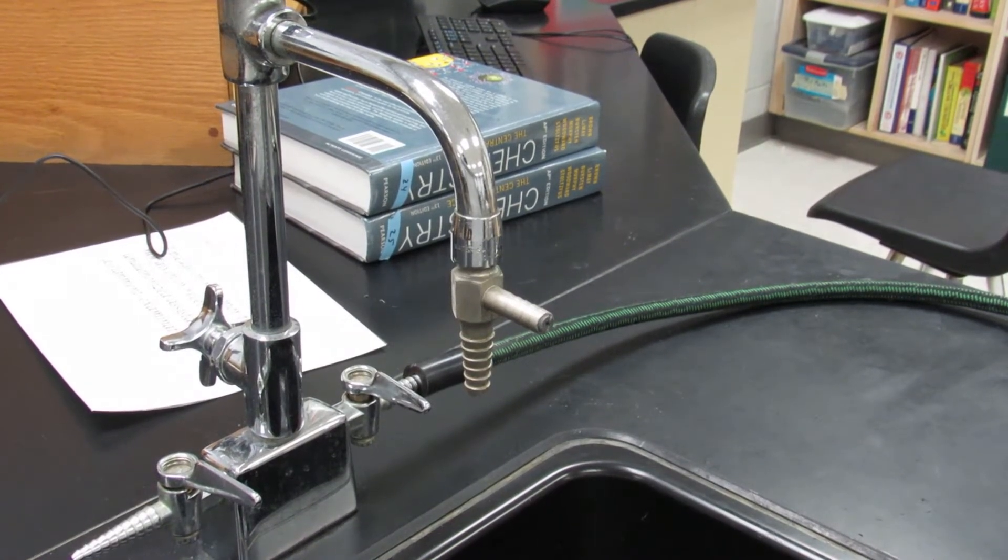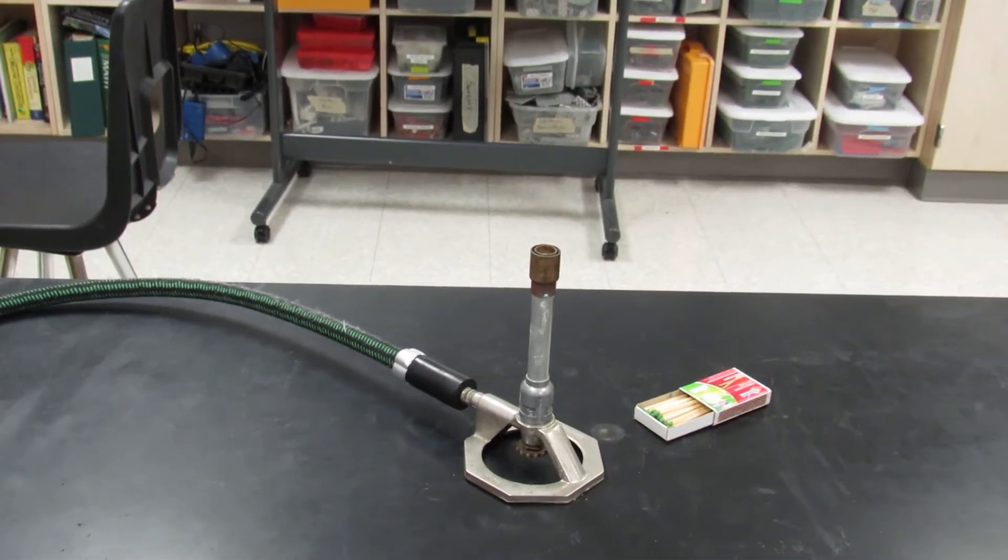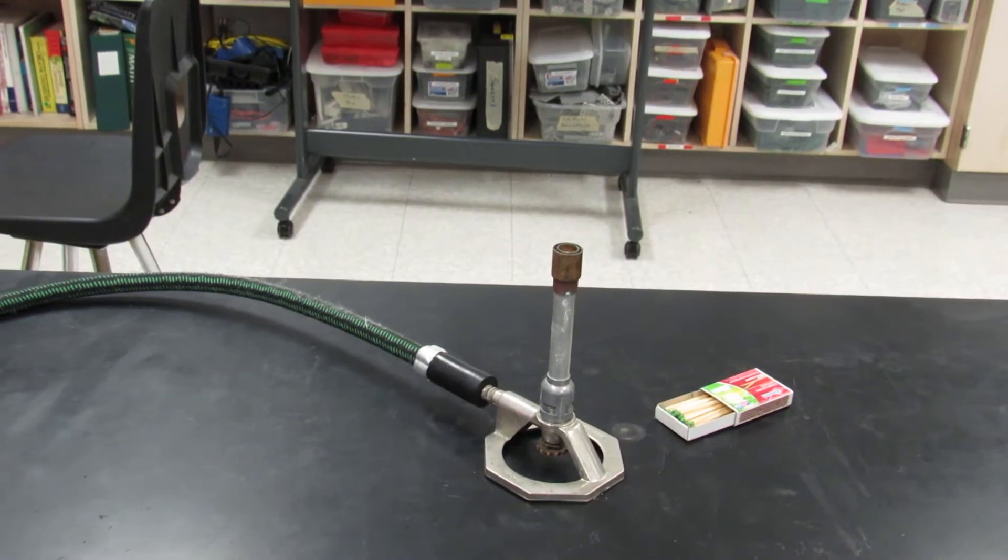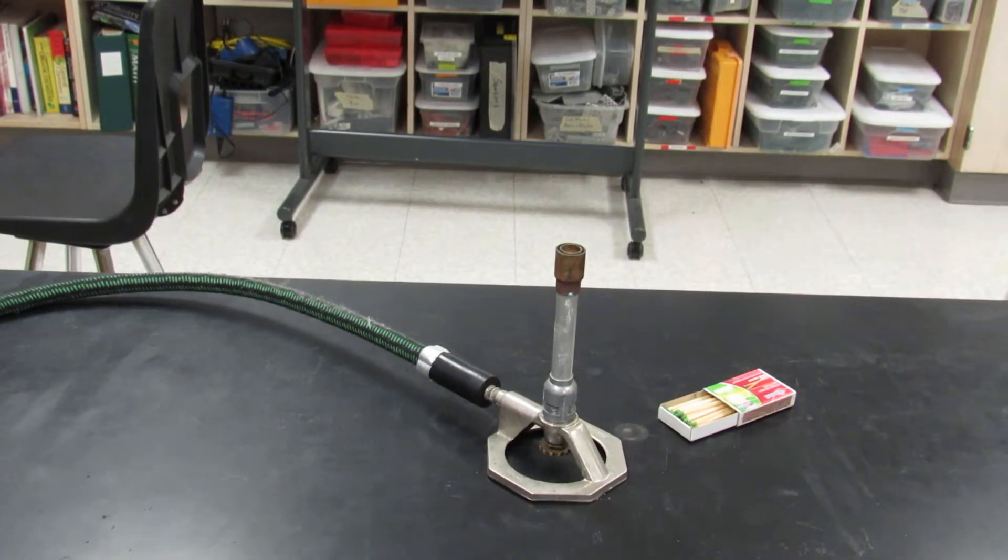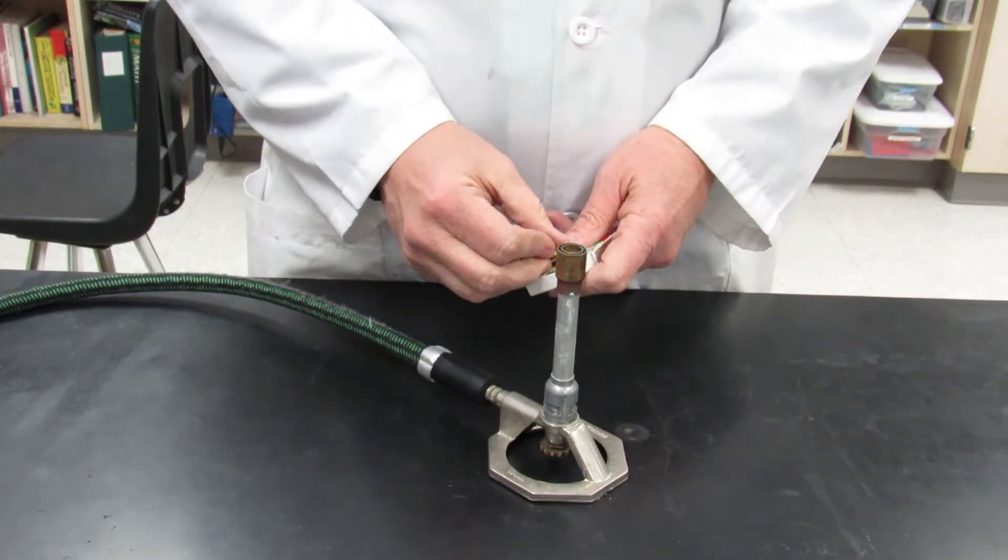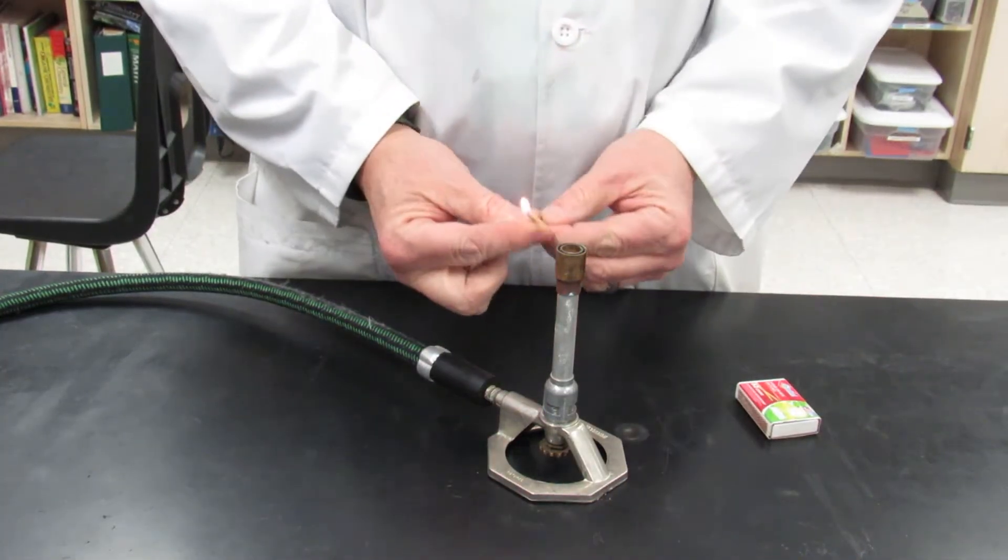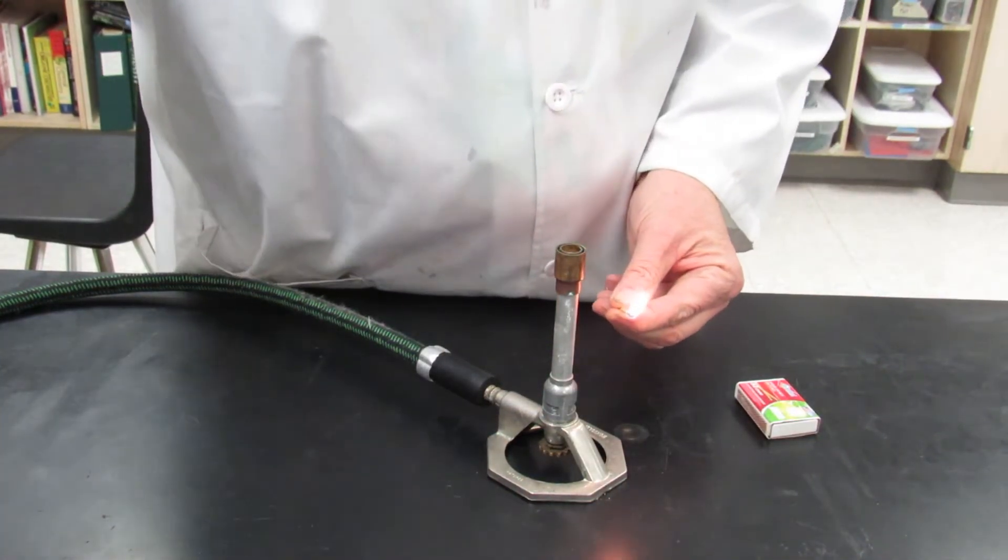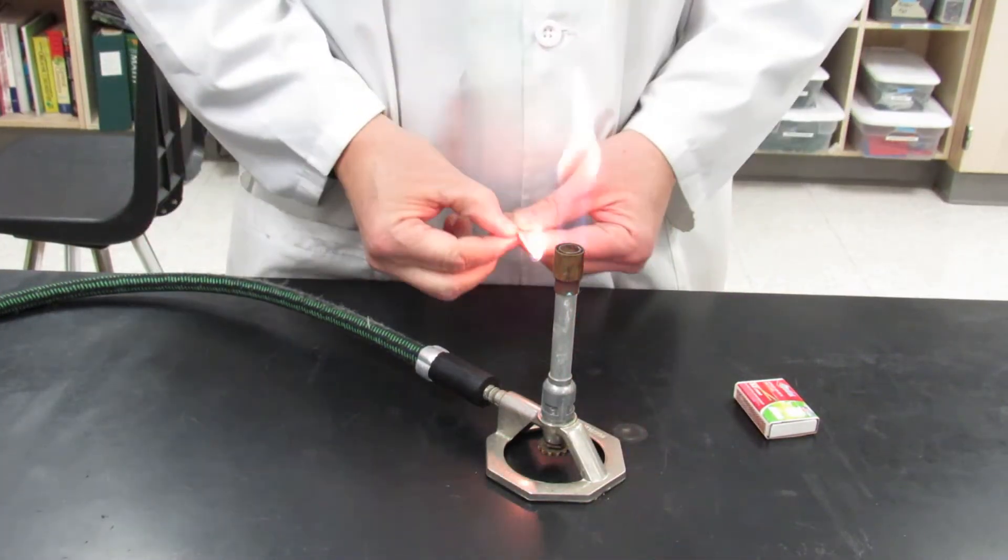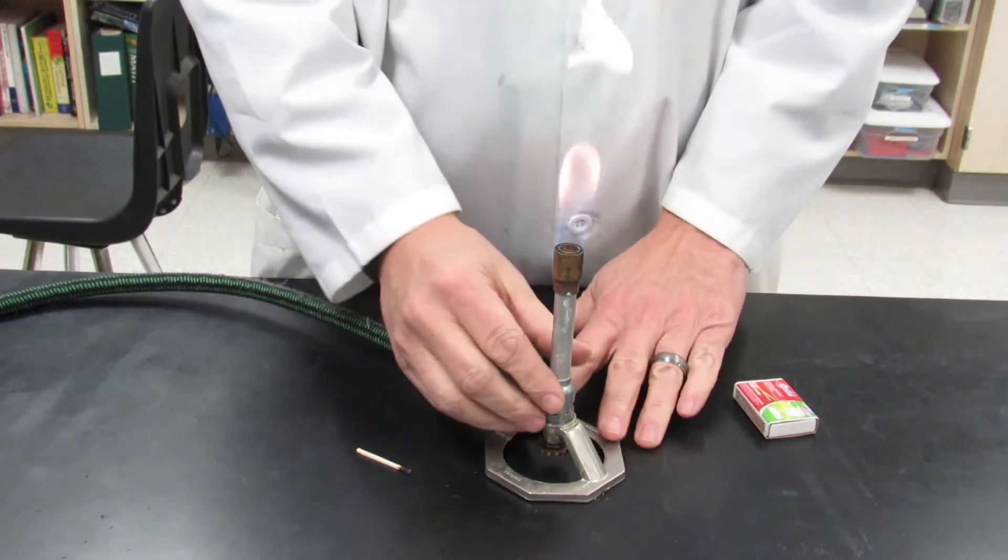Only adjust the gas to all on or all off. Next, strike your match first on the side of the box, then turn your gas on all the way. Run the match up the side, and you should have a flame. Blow out the match and set it aside. Now you need to adjust the flame.